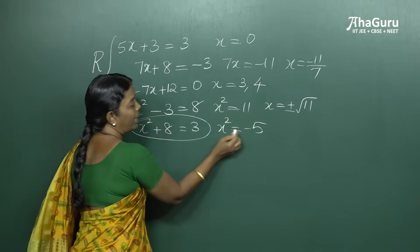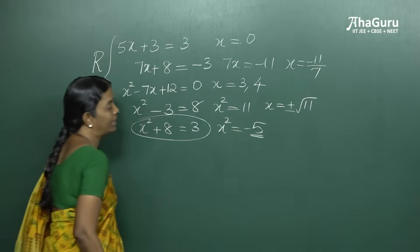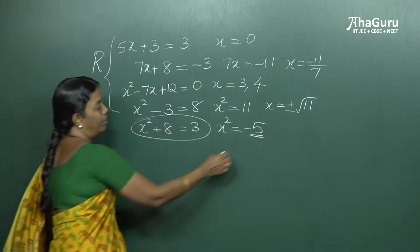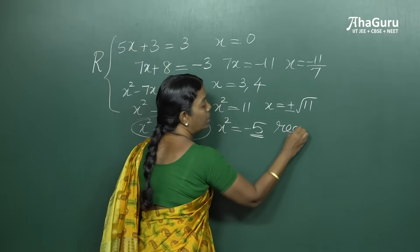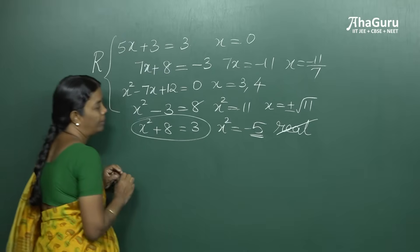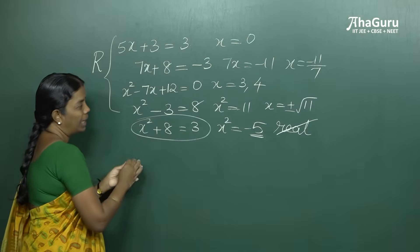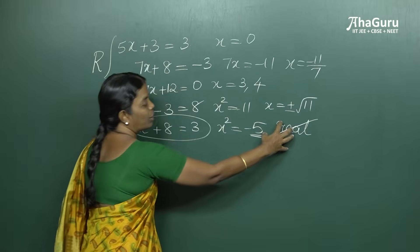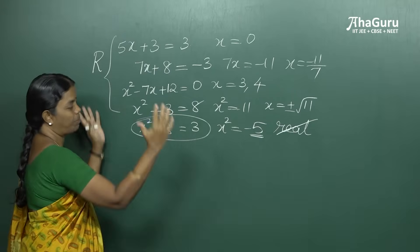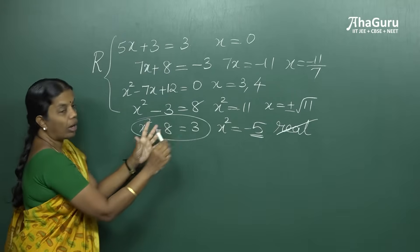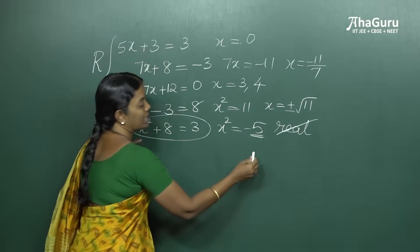But when the square of a number is going to be negative, the solution is definitely not going to be real. So what we do is take the set of real numbers and expand it into a bigger set to accommodate this solution.